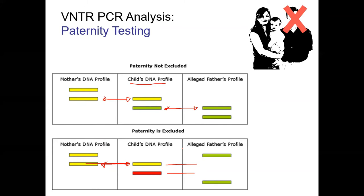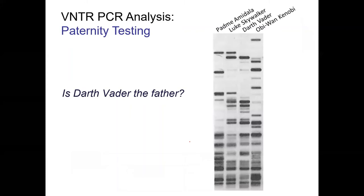Here's a real paternity test — the names are fictional but you get the idea. We have a child (Luke Skywalker), the mother, and two alleged fathers. About half the child's bands match the mother. Checking the fathers: Darth Vader has about 50% of the DNA matching — consistent with being the father. Obi-Wan doesn't have many matching bands — maybe a couple by chance — so he's excluded.